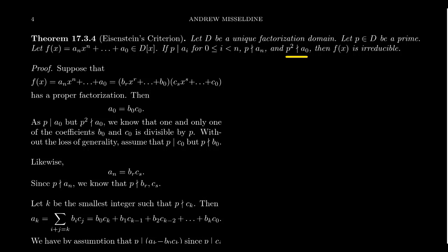But also suppose that P squared doesn't divide a₀. So again, we have this prime that doesn't divide the leading coefficient. It divides all of the other coefficients, but that prime squared doesn't divide the constant term. If those conditions are satisfied, then in fact, f must be an irreducible polynomial. And again, this is true for any unique factorization domain, such as the integers or Gaussian integers.